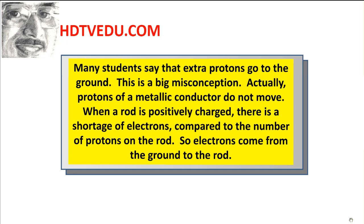Many students say that extra protons go to the ground. This is a big misconception. Actually, protons of a metallic conductor do not move. When a rod is positively charged, there is a shortage of electrons compared to the number of protons on the rod. So electrons come from the ground to the rod and neutralize all the extra positives.